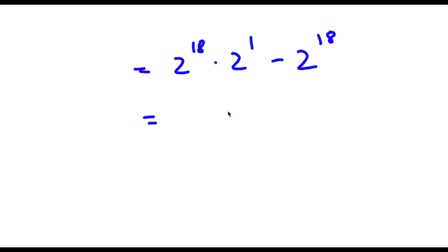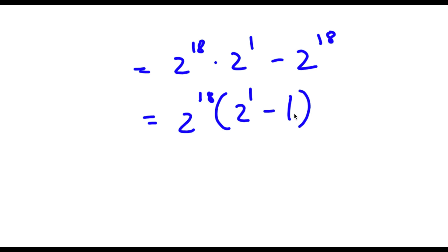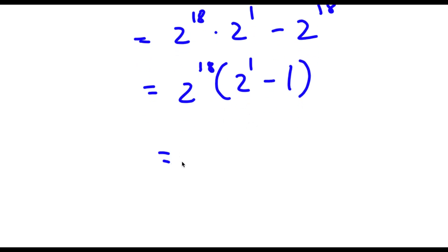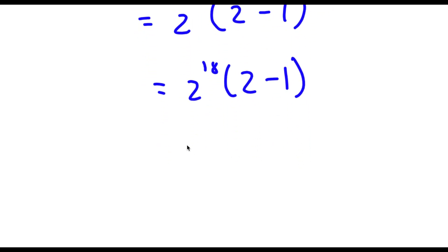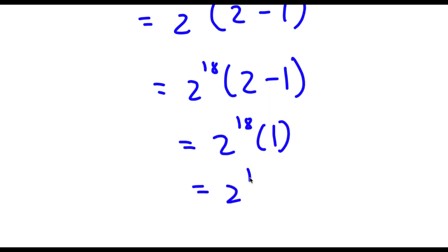Now if I factor out 2 to the power of 18, I get 2 to the power of 18 times the quantity 2 to the power of 1 minus 1. Since 2 to the power of 1 is 2, I have 2 to the power of 18 times the quantity 2 minus 1, and 2 minus 1 is 1. So I have 2 to the power of 18 times 1, which is simply equal to 2 to the power of 18.